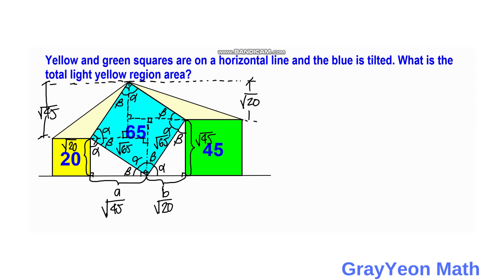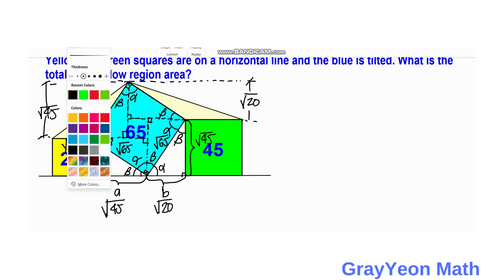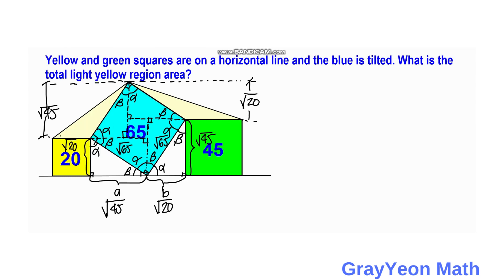Now we find the bases of the two light yellow triangles. For the triangle above the yellow square, the base is √20, and for the triangle above the green square, the base is √45.